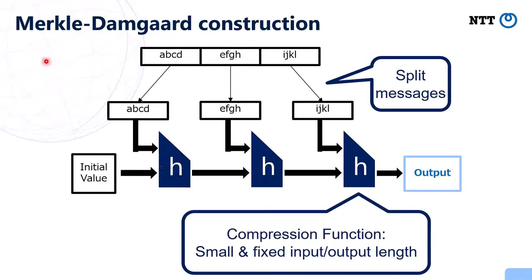The Merkle-Damgård construction looks like this: first the input message is padded and split into blocks. The first message block is processed with the compression function with the initial value. Then this output, or chaining value, is again processed with the second message block using the compression function. This continues for each block, and the final value becomes the output. The important point is that the initial value is a specified and fixed constant.